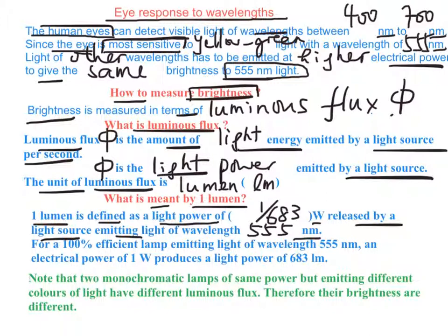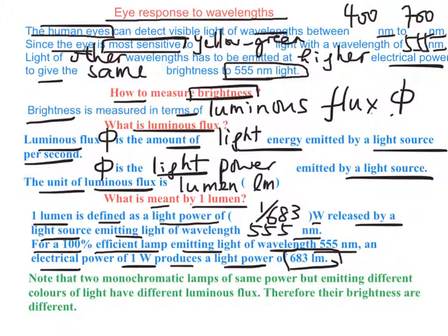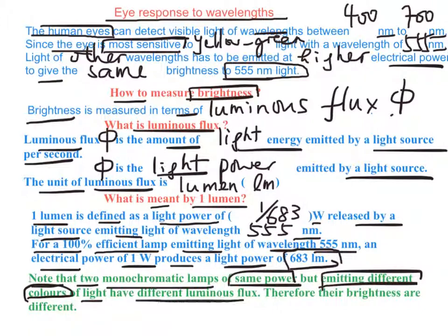For a 100% efficient lamp emitting light of wavelength 555 nanometers, an electrical power of 1 watt will produce a light power of 683 lumens. Note that two monochromatic lamps of the same power but emitting different colors of light will have different luminous flux, and therefore different brightness. In fact, one lumen is approximately the light power emitted by a single candle.